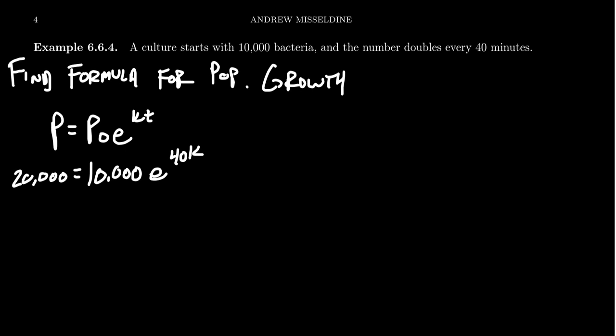Divide both sides by 10,000, you're going to get 2 equals e to the 40k. Notice that it actually doesn't matter what the initial population is. If we know it doubles every 40 minutes, if we had three bacteria, then it doubles, it would be 6. When you take 6 divided by 3, it's still 2. So the growth rate doesn't actually depend on the population size in this situation because we're doubling every 40 minutes here.